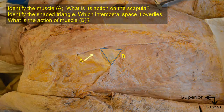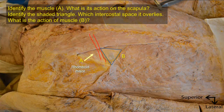Identify muscle A and its action on the scapula. The muscle is rhomboid major, attached to the lower part of the medial border of the scapula, connecting it to the spines of thoracic vertebrae. This muscle elevates, retracts, and medially rotates the scapula — an action very similar to rhomboid minor and levator scapulae located above it.